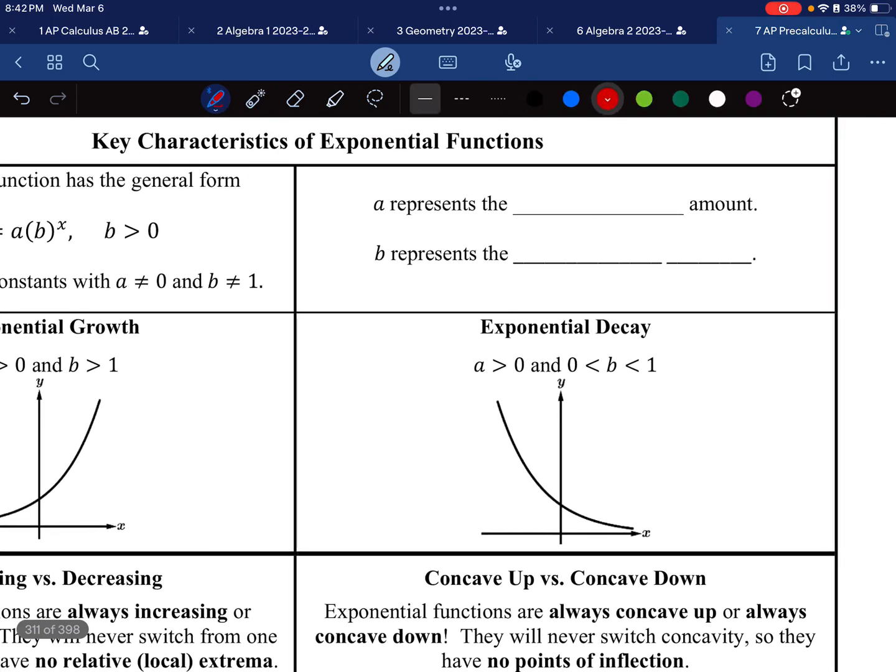Here, a is going to represent the initial value. I should also note that this is the same thing as the y-intercept. b represents the common ratio.